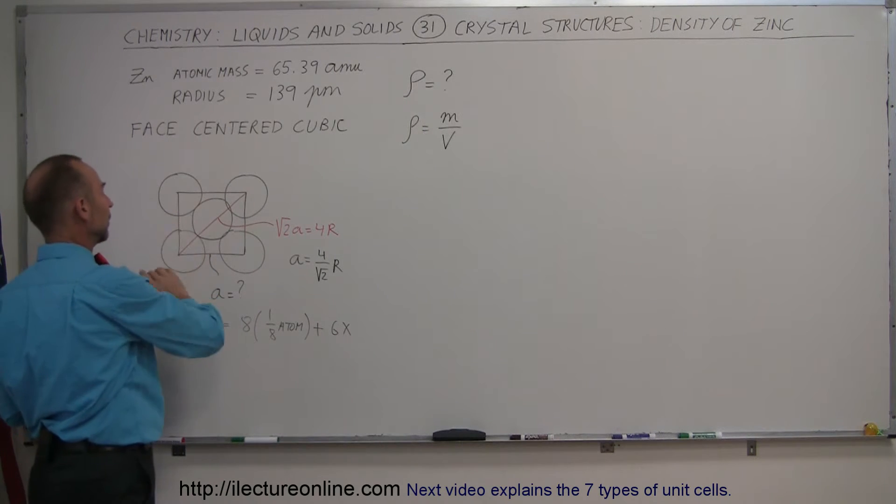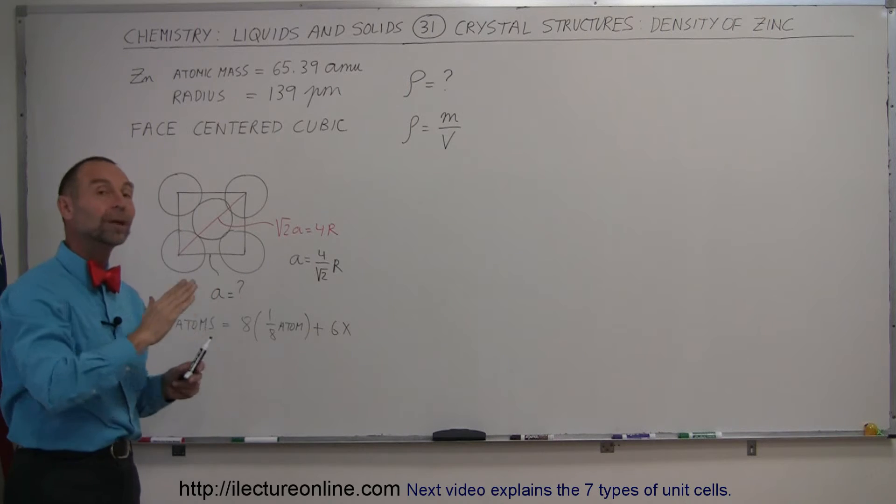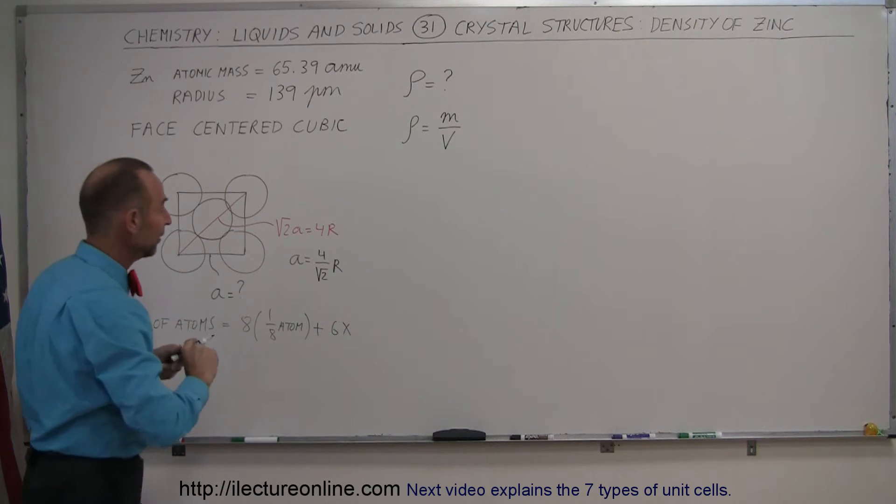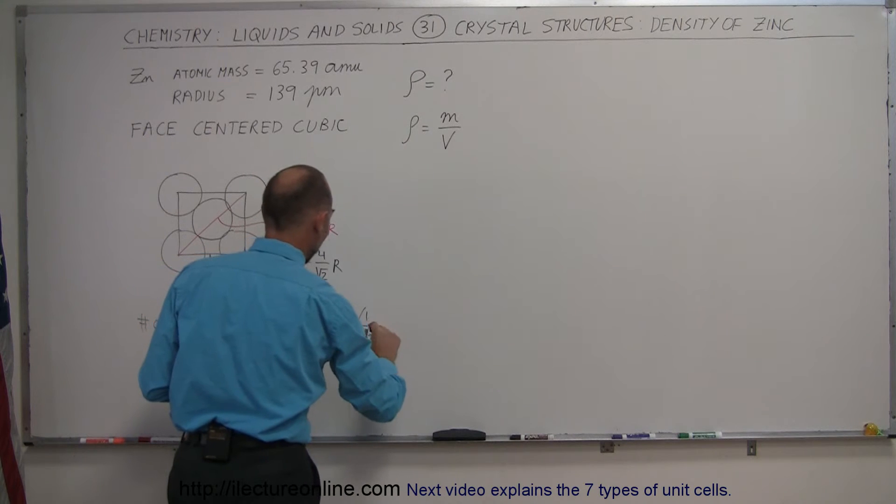For the face-centered cubic, the atoms that are at the center of each side, half of that atom is inside the cube, and half of the atom is outside the cube, in the cube next to it. So it would be six times one-half of an atom.